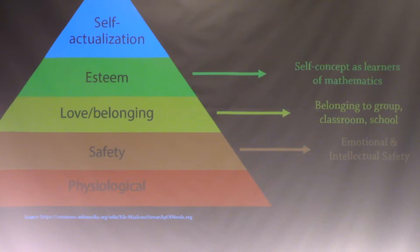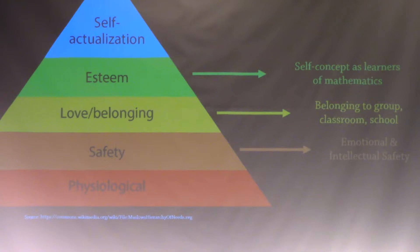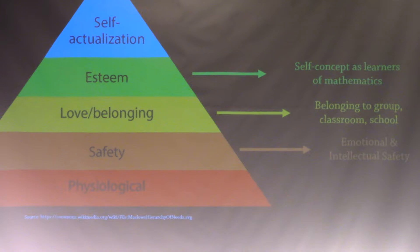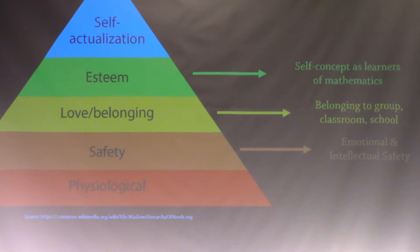At Harvey Mudd, most of my students have food to eat, but they often don't sleep very much, and that often prevents them from learning. Above physiological needs, safety might translate into the classroom as emotional and intellectual safety — whether you feel like you're going to be ridiculed for being different or for giving the wrong answer in class. Love and belonging might translate into a sense of belongingness to the classroom, the school, and if you're a teacher who puts students in small groups, belongingness to that small group might also be a factor.